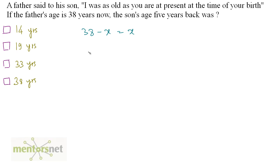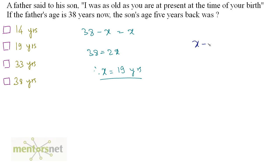We have 38 equals 2x, therefore x equals 19 years. So x is 19. The son's age five years back — five years back is x minus 5, which equals 19 minus 5, that is 14 years. So option A is the right answer.